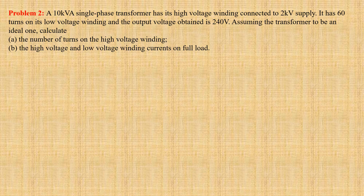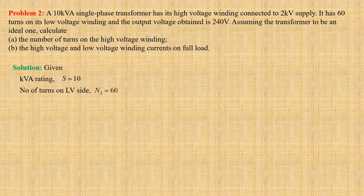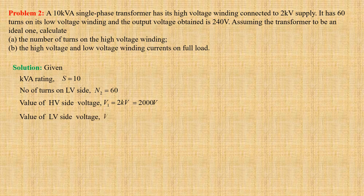Let us first jot down the given data. KVA rating of the transformer S equals 10. Number of turns on the low voltage side N2 equals 60. Value of high voltage side voltage V1 equals 2 kilovolt, that is 2000 volts. Value of low voltage side voltage V2 equals 240 volts.